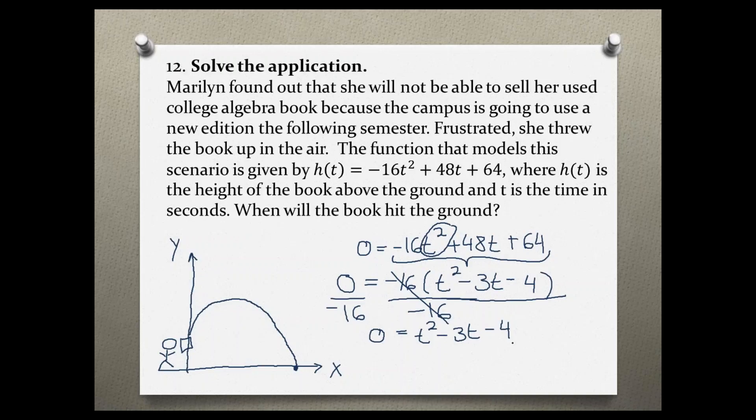So now this is a trinomial with a coefficient of 1 and we can use our factoring method by square rooting the first term. So the square root of t squared is t. We're going to write it twice. Bring down the first sign.